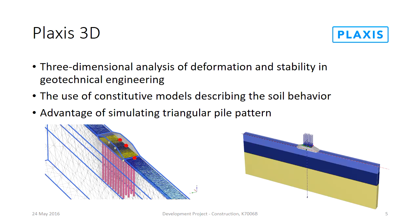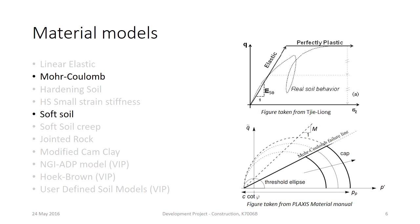There are different models that can be used to describe soil behavior. The material models used in this project are the Mohr-Coulomb model and the soft soil model. The Mohr-Coulomb model is based on linear elastic to perfectly plastic behavior and is one of the easiest and most well-known models used in geotechnical engineering. Since the model is perfectly plastic, the yield surface is fixed — meaning no soil hardening or softening due to constant stiffness. The Mohr-Coulomb model is used to simulate the behavior of the bottom till layer.